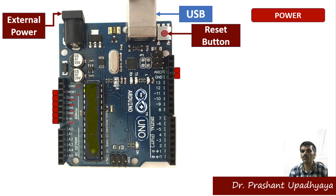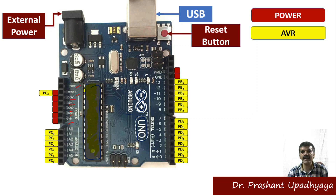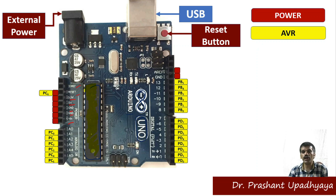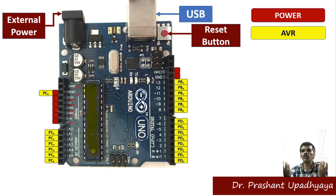There is also a Vin pin for variable supply input. The Arduino UNO uses an AVR microcontroller. When you study microcontrollers in detail you will learn about the AVR family — these are the microcontroller chip families used in the design. The chip has ports: Port B (PB), Port D (PD), and Port C (PC).